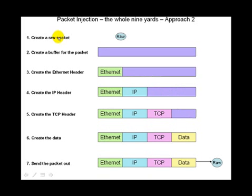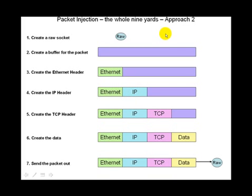The second technique is creating a raw socket, then creating a buffer for the packet itself. In this case, we take a large enough buffer — say we want to create a packet of 1500 bytes, we create a packet buffer of size 1500. For the first 14 bytes we create the Ethernet header in this buffer. Then we create the IP header, which would be the next 20 bytes assuming no options field. After that we create the TCP header, and then the rest is filled with whatever data we want to send. Then we send this out through the raw socket created in the first step.